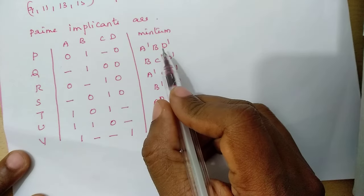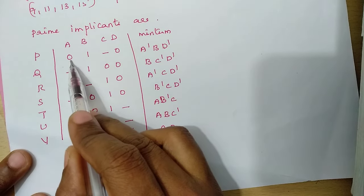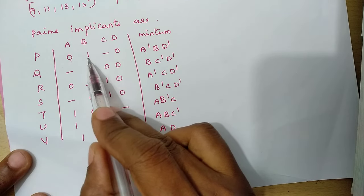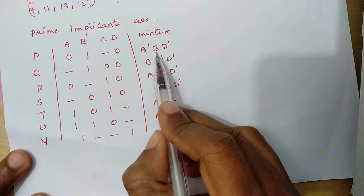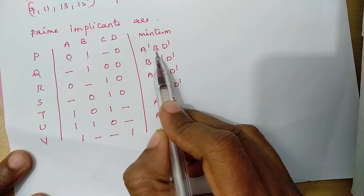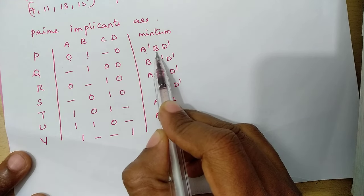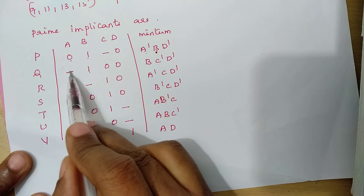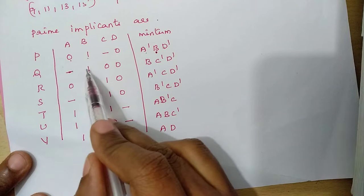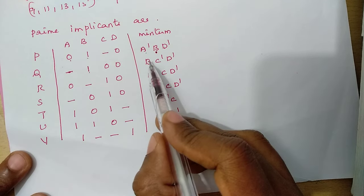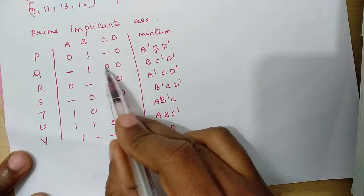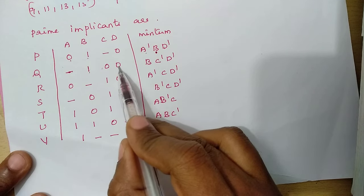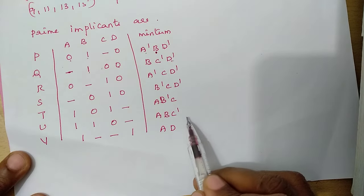Now we convert the prime implicants to Boolean expressions. In sum of minterms form, a 0 means the variable is complemented (bar) and a 1 means uncomplimented. A dash means the variable is absent. So for example, if A position is 0, write A bar; if B is 1, write B; if C is 0, write C bar; if D is 0, write D bar. Similarly, all prime implicants are converted to their Boolean expressions.